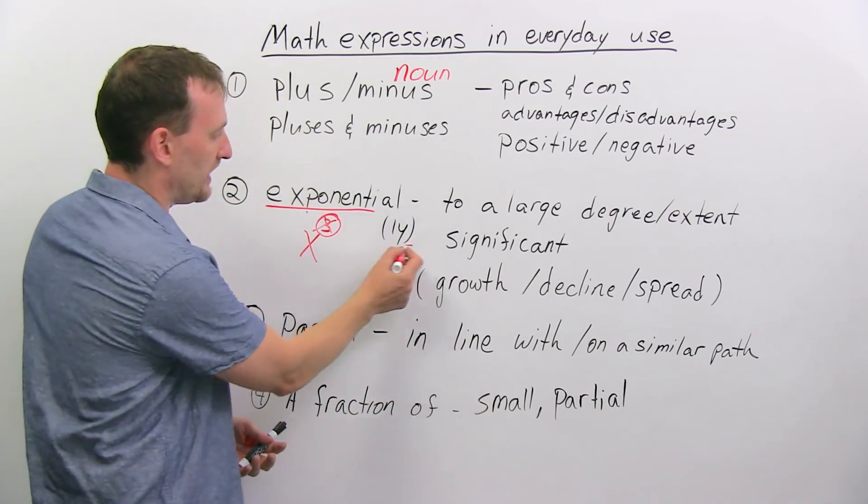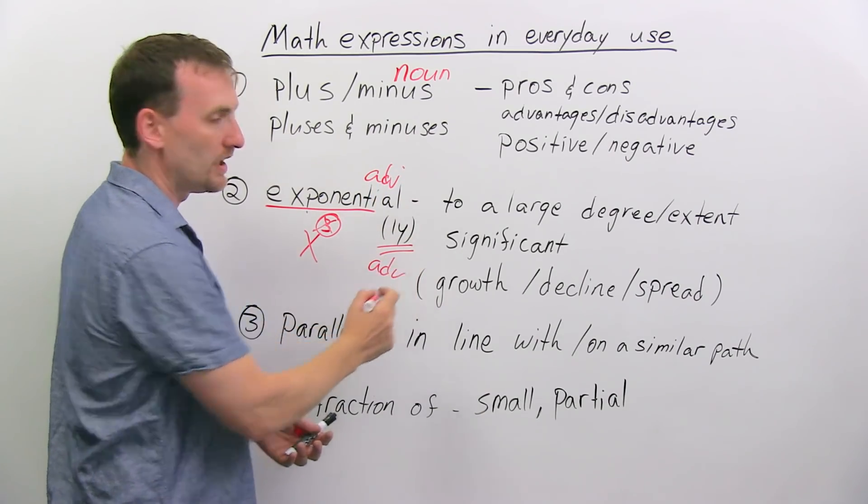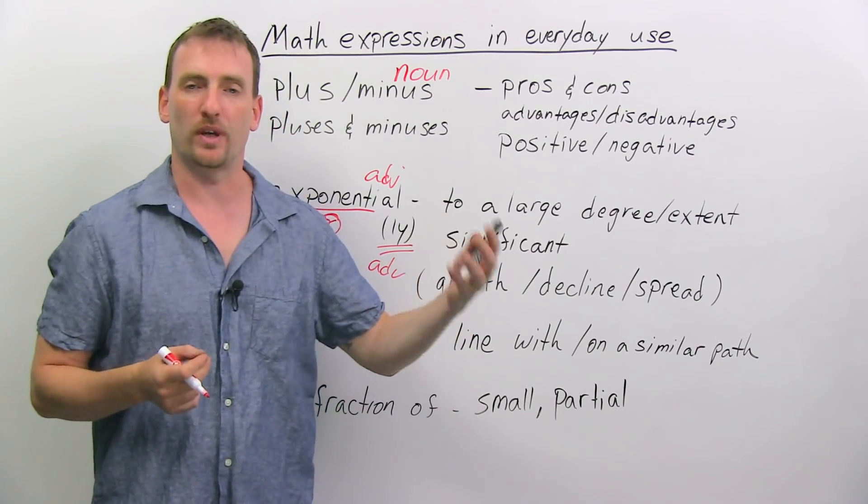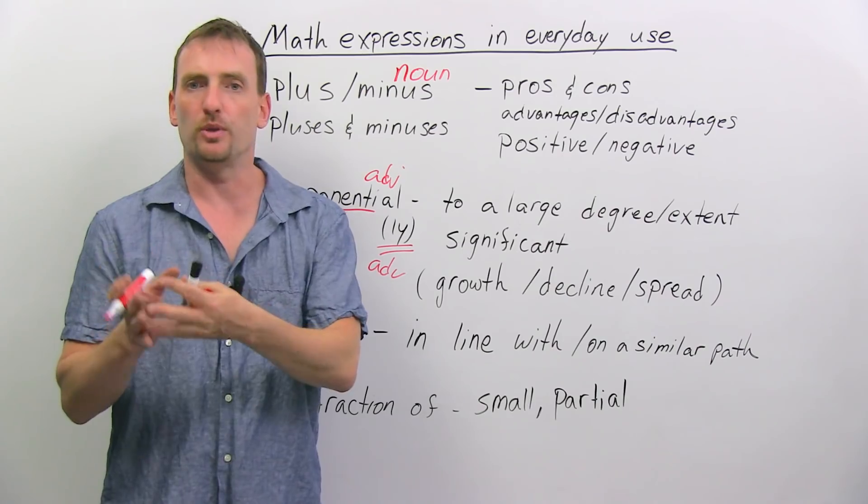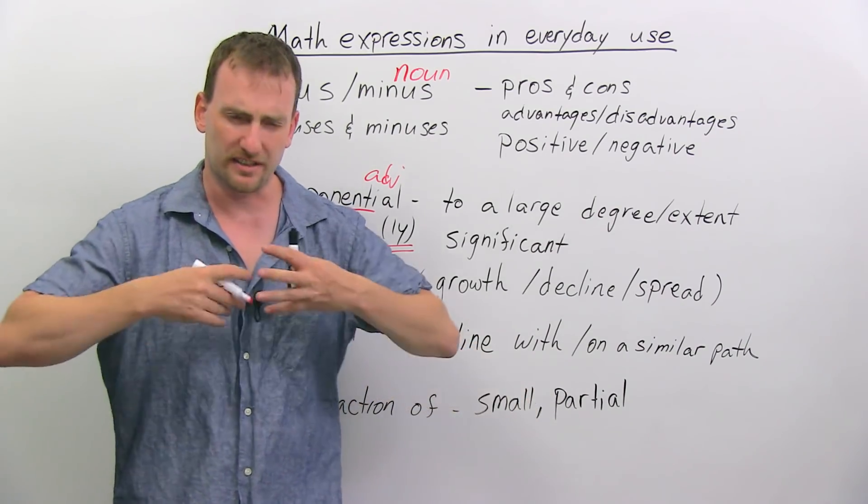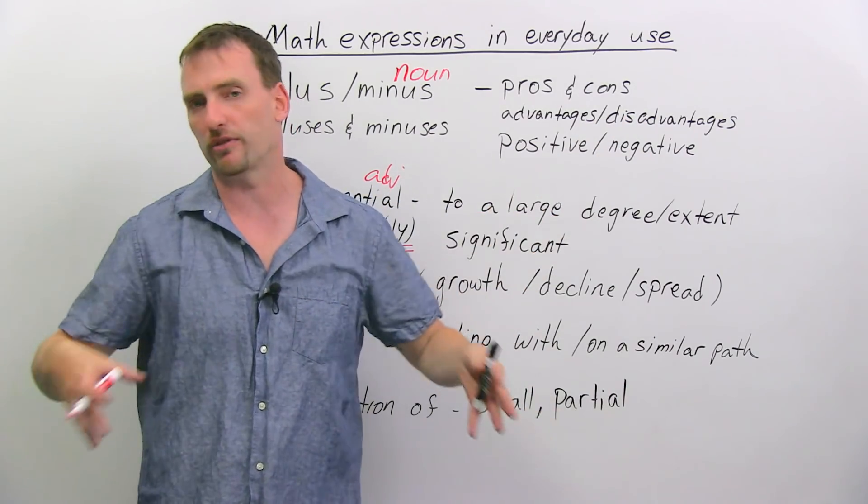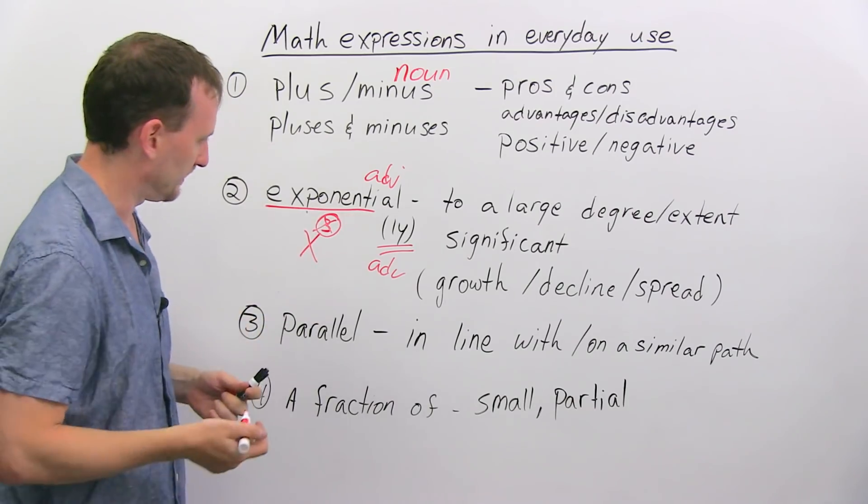In this case, I'm using the adverb. Exponential is an adjective, exponentially is an adverb, and most of the countries witnessed exponential growth. The use of the internet has spread exponentially around the globe. It means it's spread very fast and all over the place. So there's no number, just very quickly, very fast.